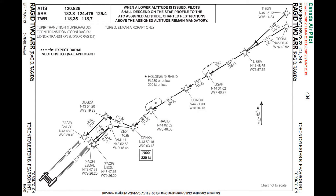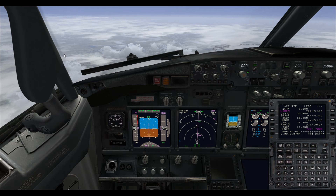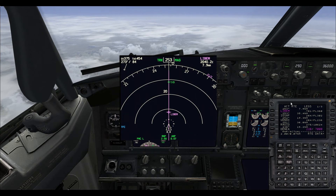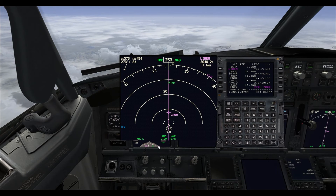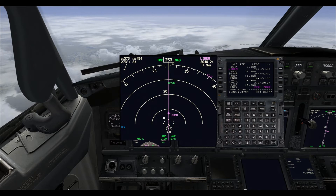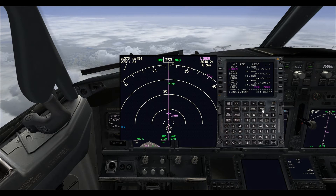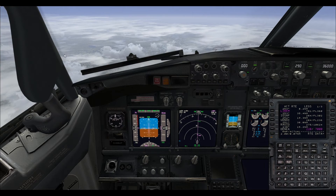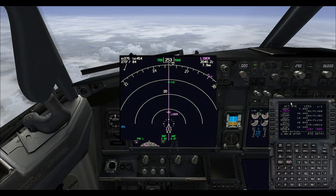Looking at the chart for the Ragged 2 arrival, which is our arrival for our flight plan, we can see that the chart calls for us to cross Danka at 7000 feet and 220 knots. Our controller has just given us the instruction to cross at our discretion at 7000 feet and 220 knots. The first thing we do is check our FMS to see that it covers that altitude and speed restriction properly, which it does.